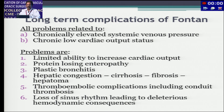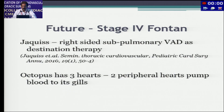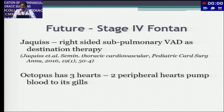Long-term complications of Fontan are all related to the chronically low cardiac output state. Looking to the future — stage four Fontan — Jacobs has proposed a right-sided sub-pulmonary ventricular assist device as destination therapy in all Fontan patients. Perhaps that is the future, wherein all these patients have a sub-pulmonary ventricle.